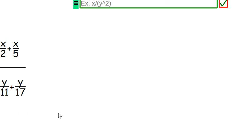6.2. So we have x over 2 plus x over 5, and that's all over y over 11 plus y over 17.